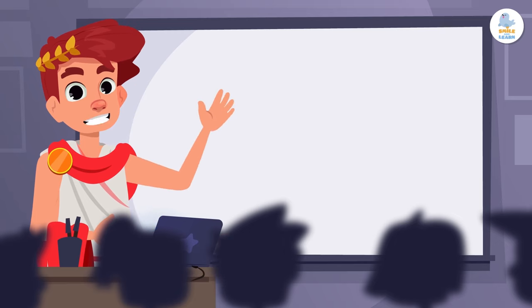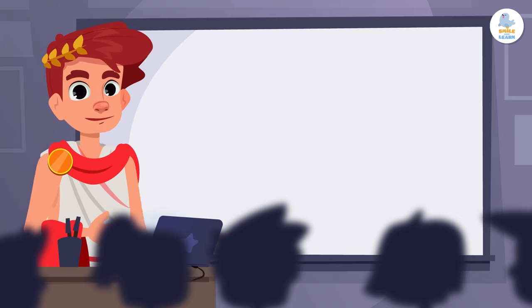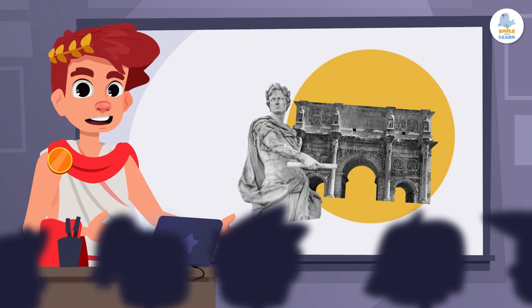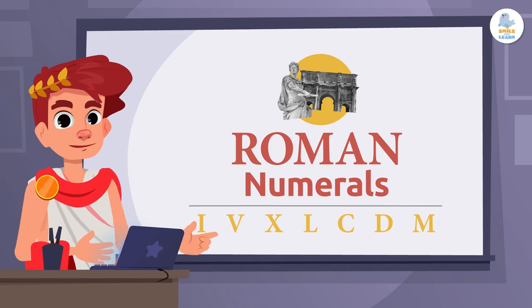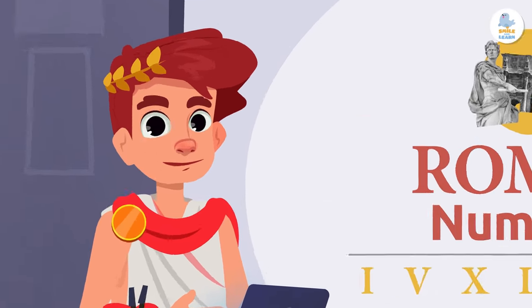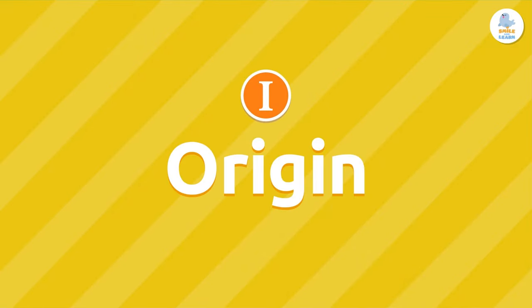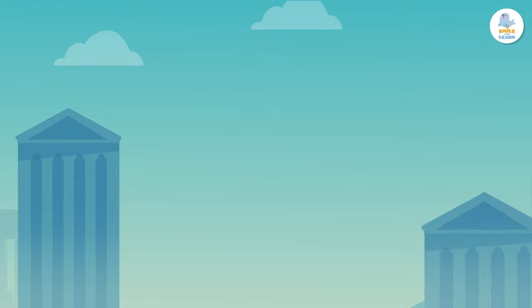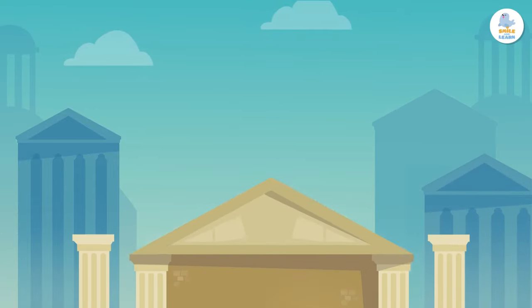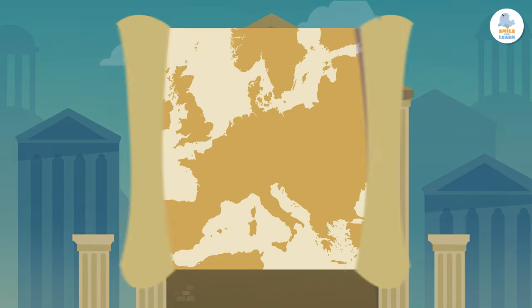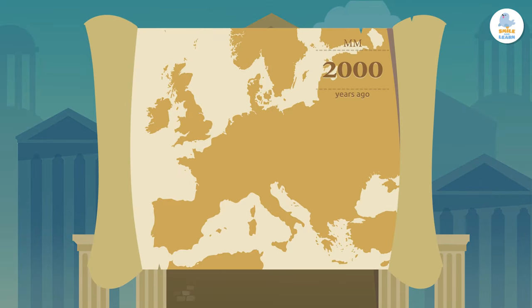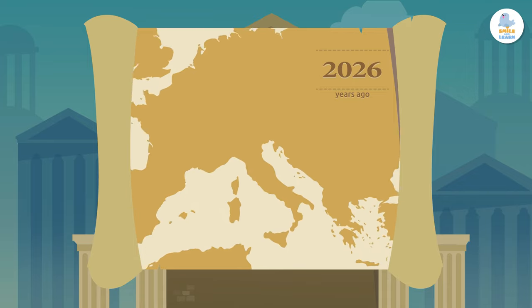Hello friends! Today we're going back in time to ancient Rome to learn about Roman numerals. Are you coming with? Let's go! Roman numerals are the numbering system used in the Roman Empire more than 2,000 years ago, but the origin of this system is even older — it comes from the civilization of the Etruscans.